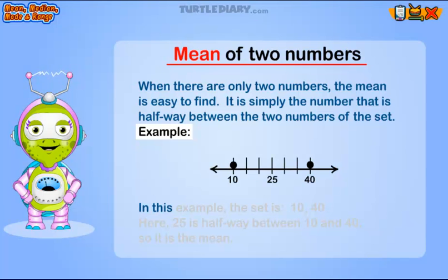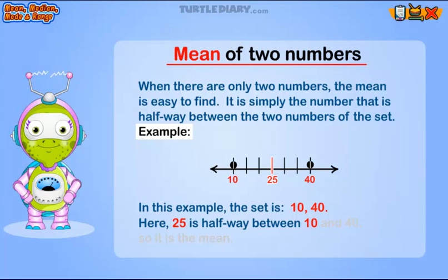In this example, the set is ten, forty. Here, twenty-five is halfway between ten and forty, so it is the mean.